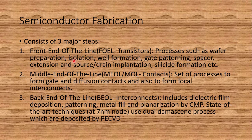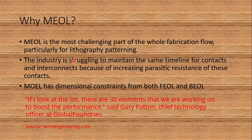Middle end of the line is also called contact formation. It involves a set of processes to form gate and diffusion contacts and also local interconnects. In the third stage, back end of the line (BEOL), interconnects are formed — dielectric film deposition, patterning, metal fill, and planarization by chemical mechanical planarization. State-of-the-art techniques at 7nm use the dual damascene process with plasma-enhanced chemical vapor deposition.